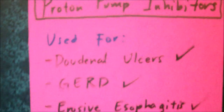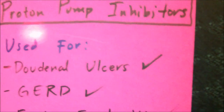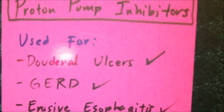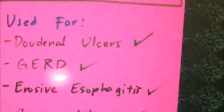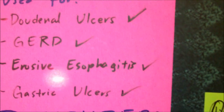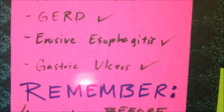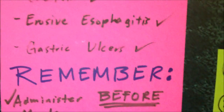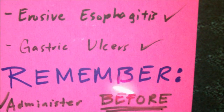So when do we usually use these drugs? PPIs or proton pump inhibitors are usually used as a treatment for duodenal ulcers, also for patients with GERD, erosive esophagitis, and also for patients with benign gastric ulcers.